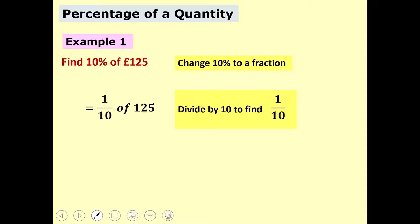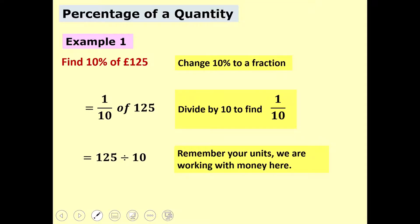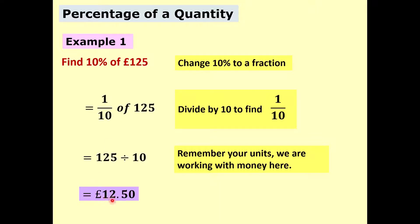So to find a tenth of 125 we're going to do 125 ÷ 10. We are doing this without a calculator. Remember your units — we're working with money here, so your answer needs to include the pound symbol. Because you get 12.5, you add a zero to give £12.50. So 10% of £125 is £12.50.